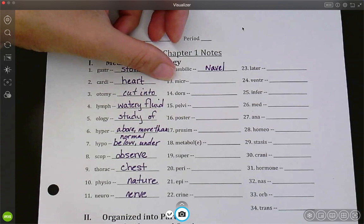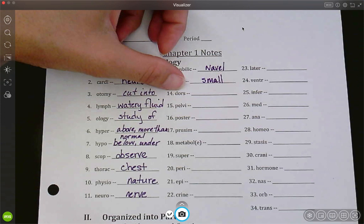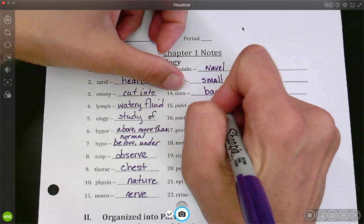Micro. So we said a microscope. Micro means small. So we're observing something small. Dors. My hint for this would be a shark has a dorsal fin. A dolphin has a dorsal fin. Where are those found? On the back.